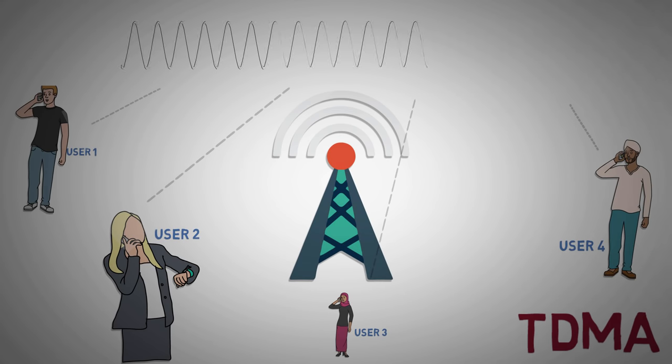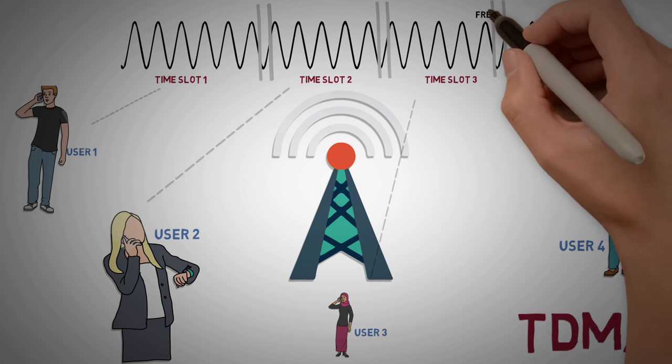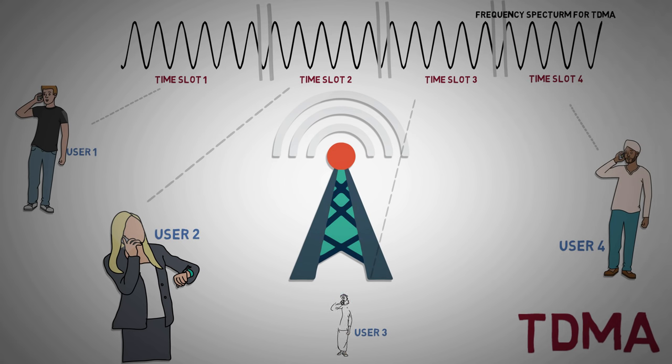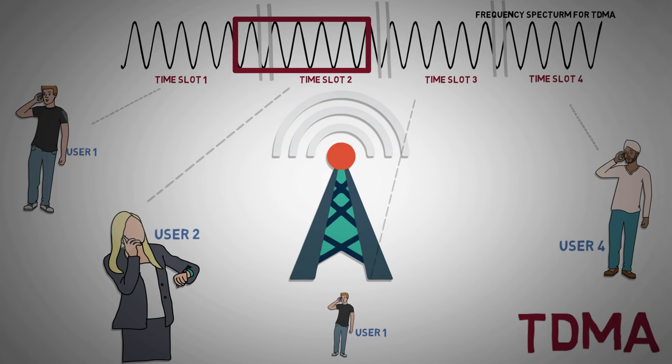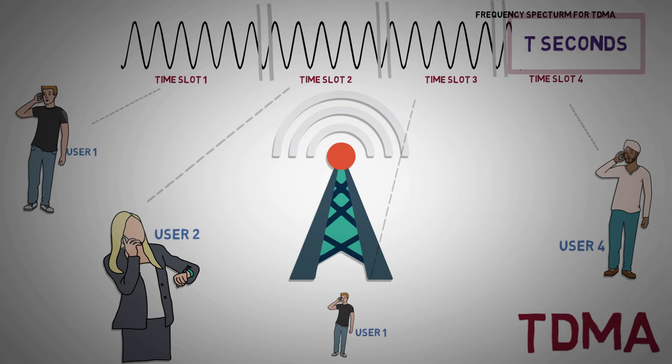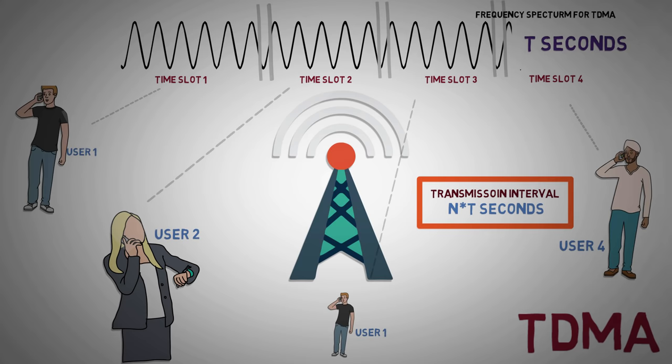TDMA, which uses time division multiplexing, allows multiple users to share a common frequency band by allocating different time slots. Thus, in an n-channel TDMA where each channel is given a time slot of 2 seconds, signals coming from each user will be transmitted at intervals of n times 2 seconds.